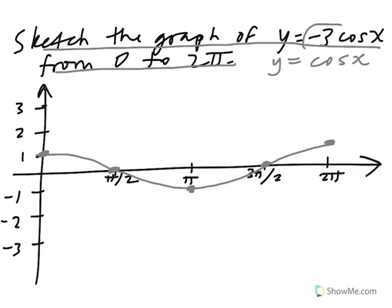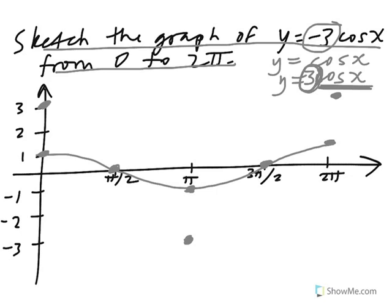There's the basic cosine curve. Now let's see what happens when we multiply everything by negative 3. Let's first do 3 times cosine of x. Multiplying everything by 3, we're taking all these y values of cosine of x — for example, 1, 0, negative 1, 0, 1 — and just multiplying them by 3. So where we used to have a 1, now we have a y value of 3. Where we used to have a y value of negative 1, now we have a y value of negative 3. For an angle of 2 pi, we used to have a y value of 1, but now it's multiplied by 3. The points where it crosses the x-axis still remain 0, because 3 times 0 is just 0. So let's sketch this curve.